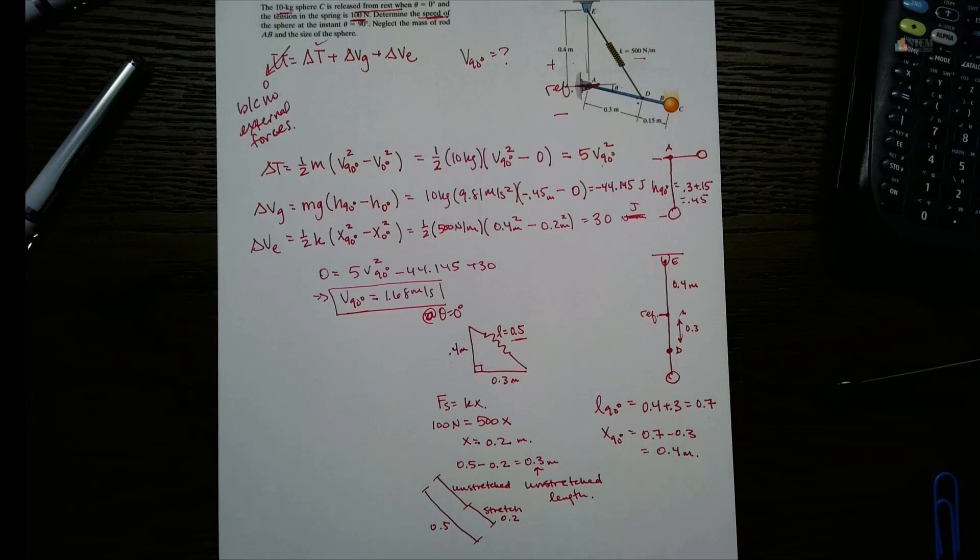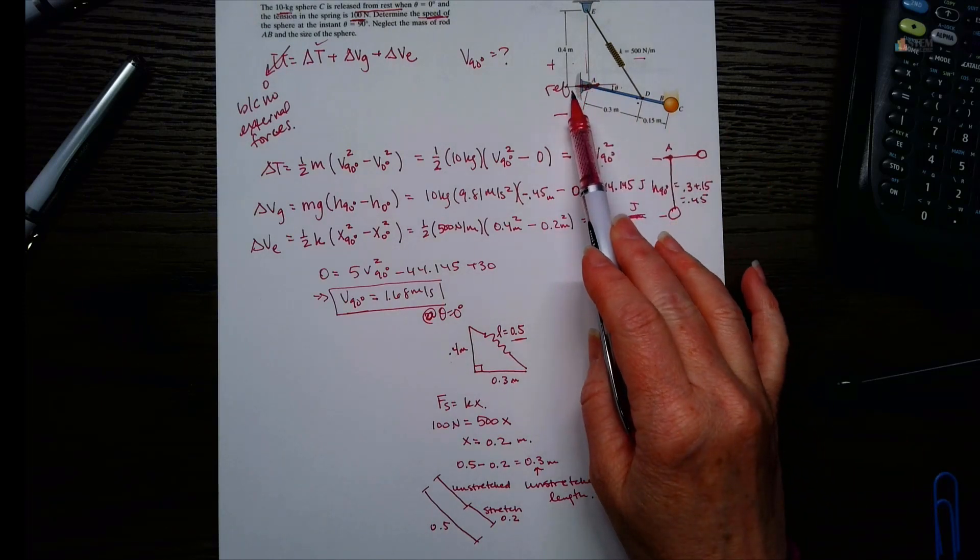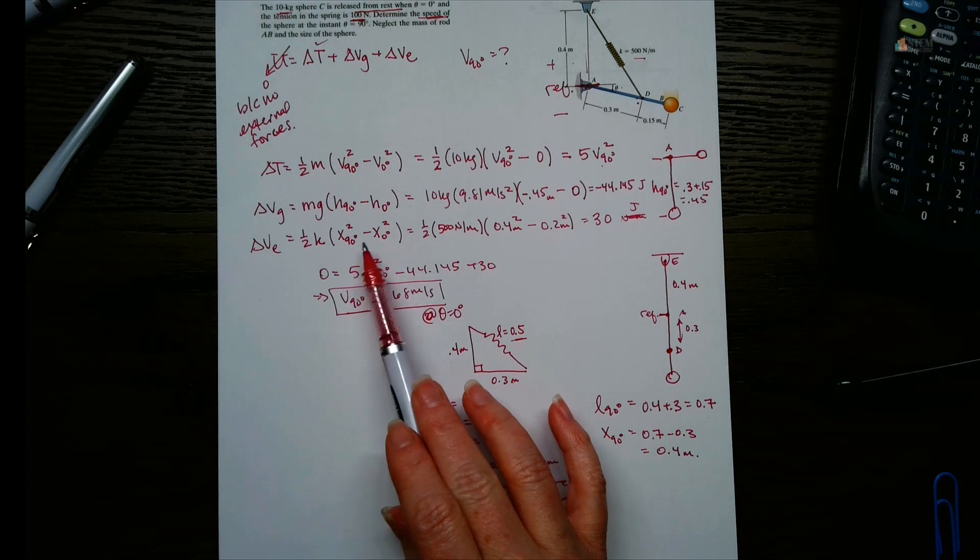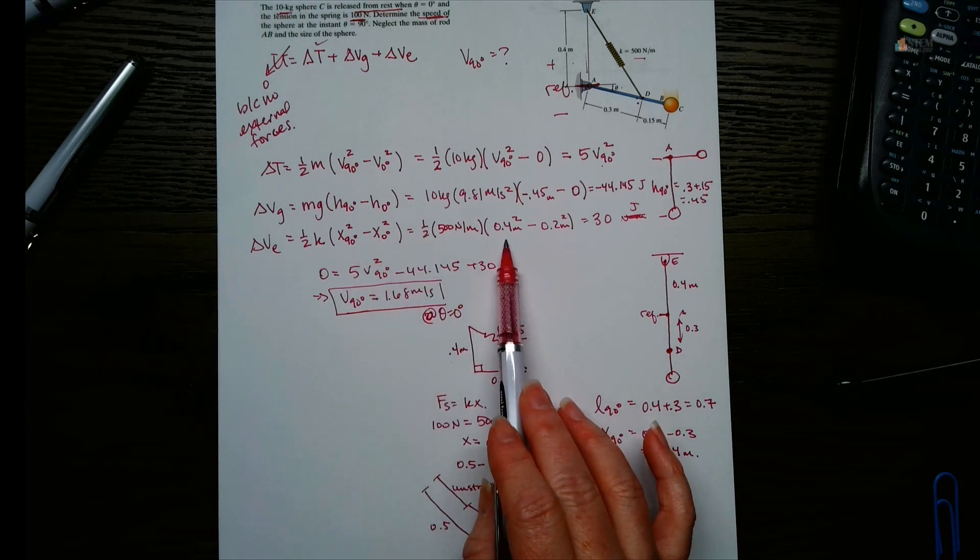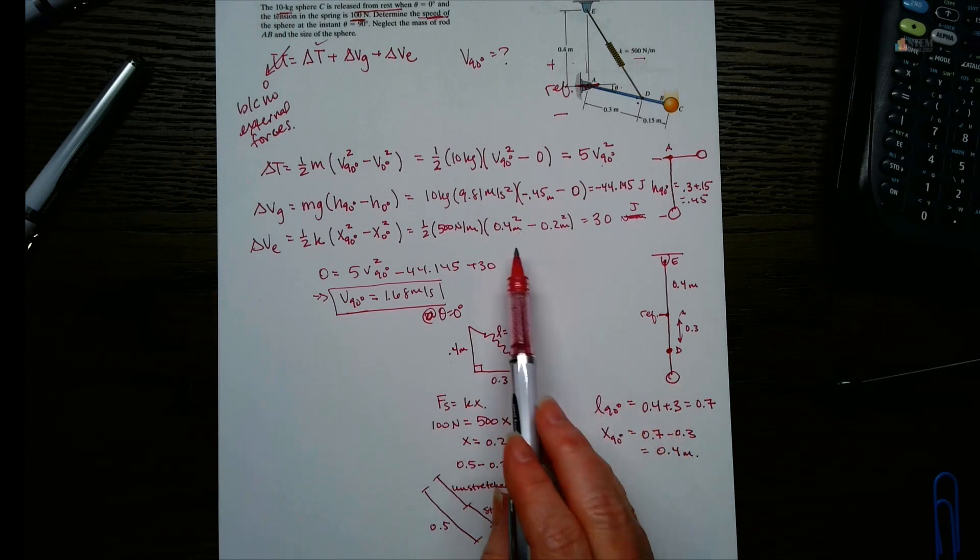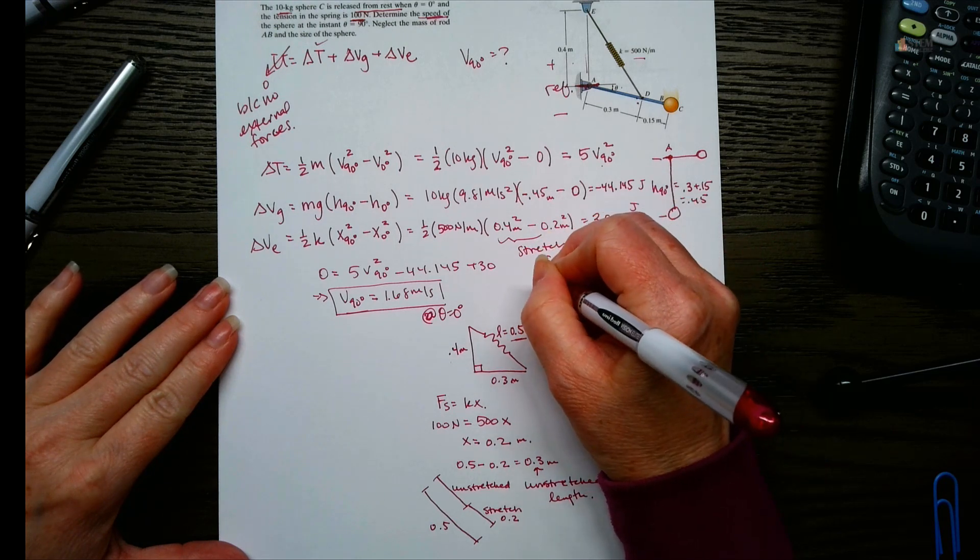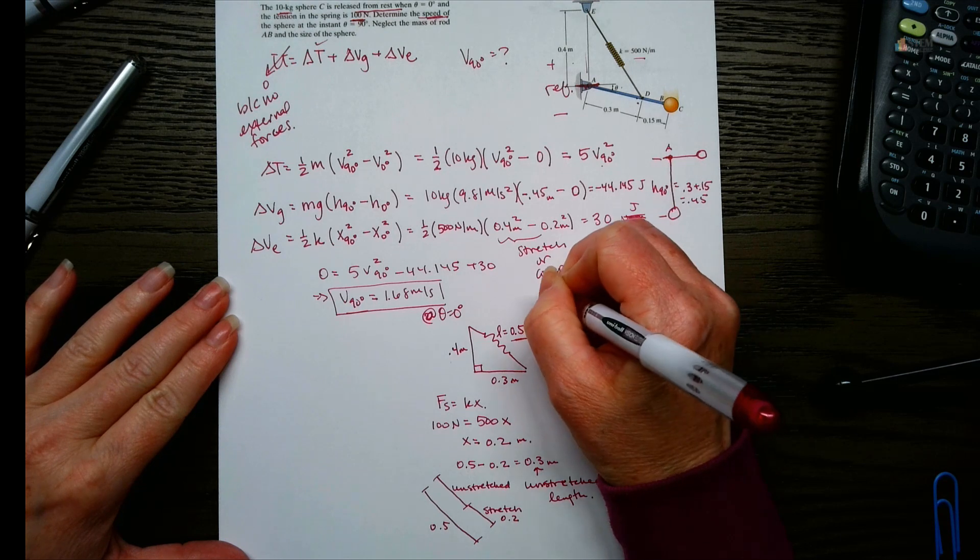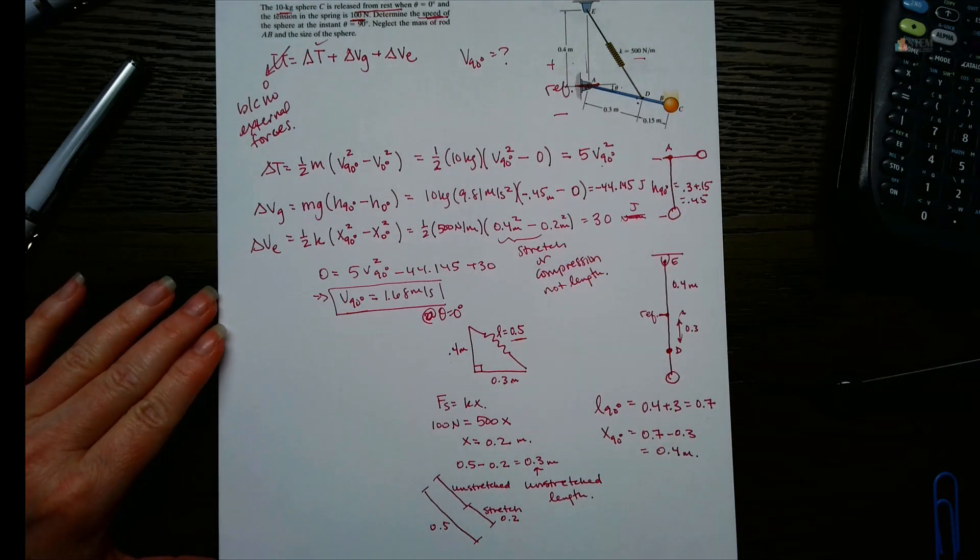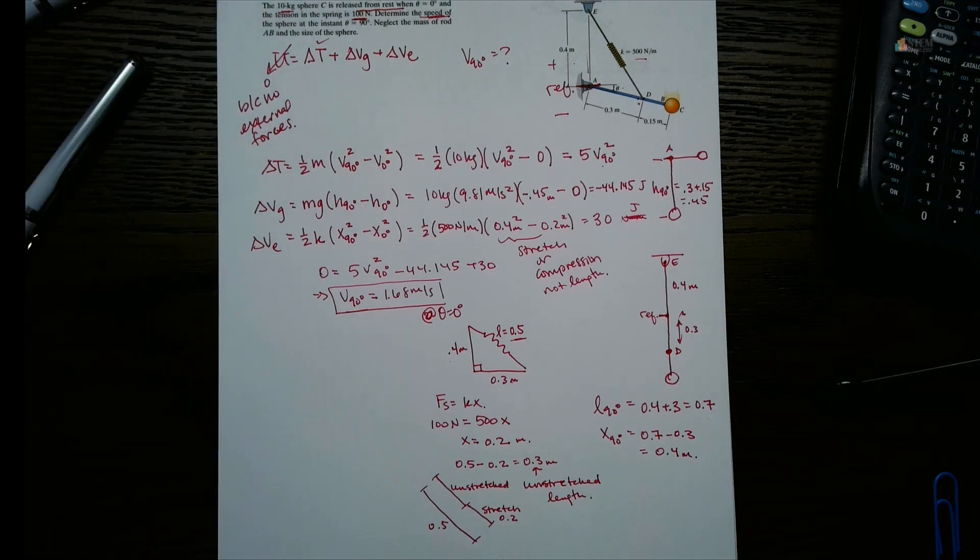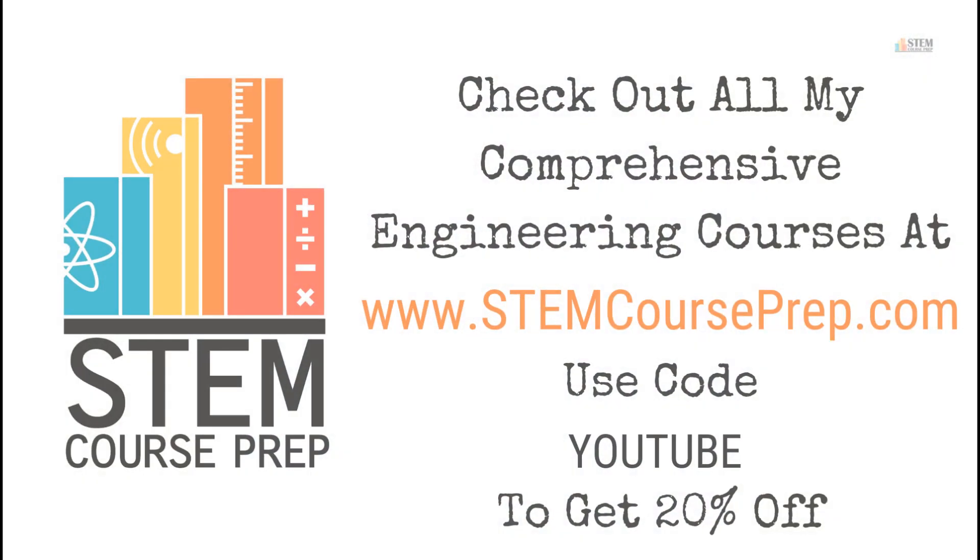So there you have it. That's how you work through those problems. The things that most people miss on this on tests, they are inconsistent with their reference when they're doing these heights. So you've got to be consistent there. And then on the springs, they just put the length instead of the stretch or compression. So this is stretch or compression, not length. But otherwise, it's pretty straightforward and easy to use that equation there. I will see you guys next time. Y'all have a great night.